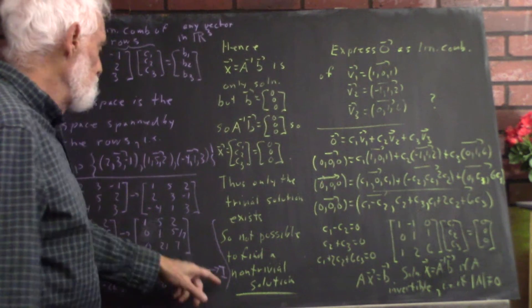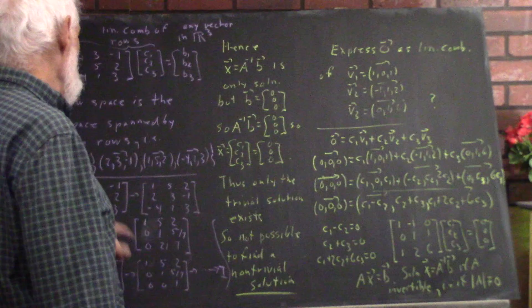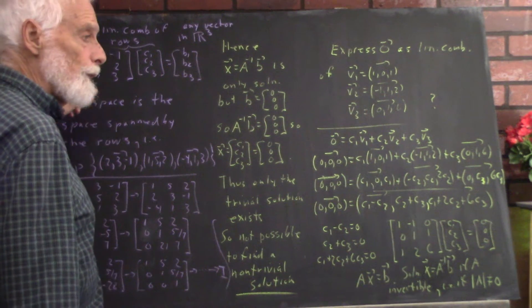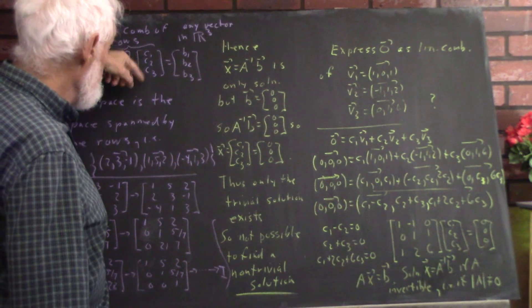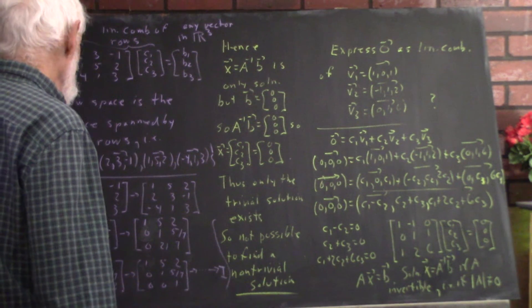This matrix reduces to the identity. It is like this situation. The matrix is invertible. If you multiply the inverse of the matrix by the zero vector, you get the zero vector. So, C1, C2, C3 would have to be zero.